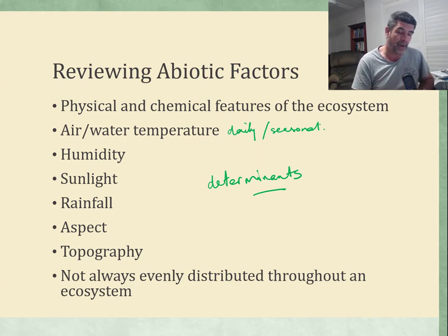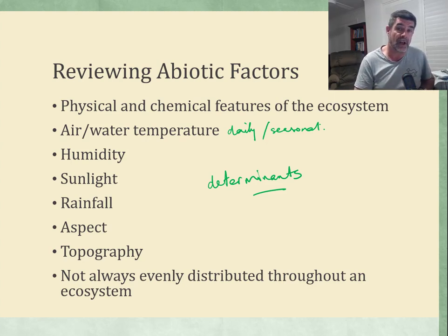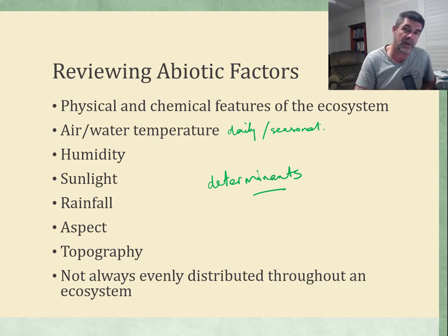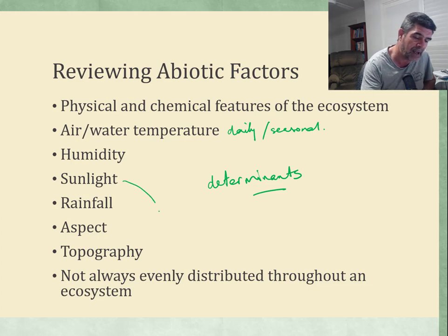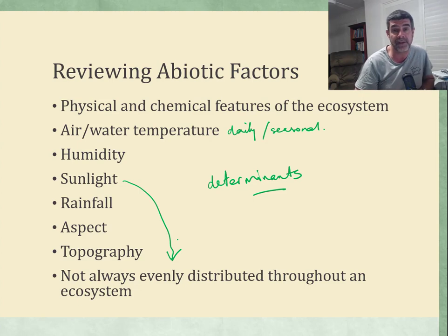Rainfall is very important, both how much and when it falls. Aspect — which direction your ecosystem is facing — is particularly important when looking at coastal or mountainous ecosystems, where facing north as opposed to east or west has consequences, and that connects to topography. One important thing to remember is that abiotic factors are not always evenly distributed through the ecosystem. There might be a huge amount of light falling onto a particular ecosystem, but not all of that light may actually be reaching all of the living organisms equally.